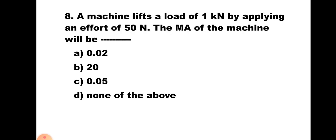Question number 8: A machine lifts a load of 1 kilo Newton by applying an effort of 50 Newton. The MA of the machine will be — A) 0.02, B) 20, C) 0.05, D) none of the above. MA is load lifted upon effort applied. Convert load to Newton: 1000 upon 50 equals 20. Hence the correct answer is B) 20.